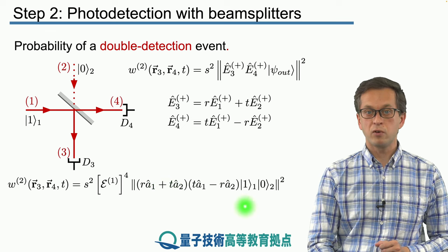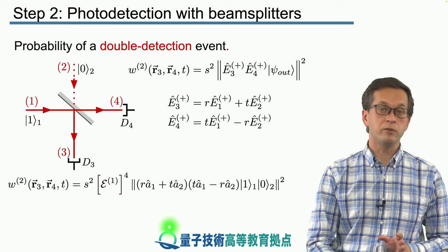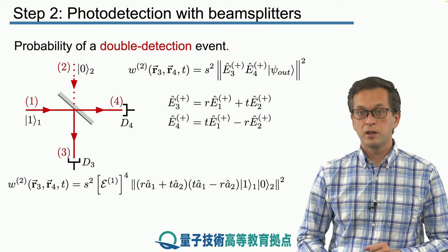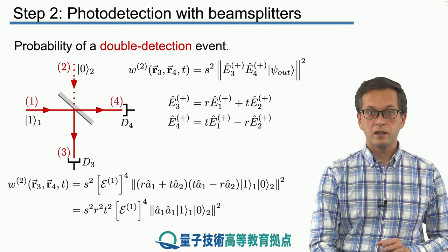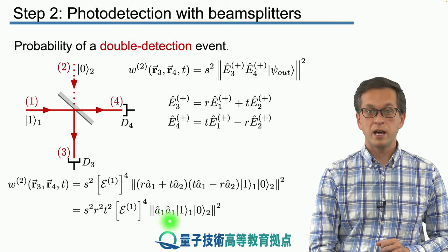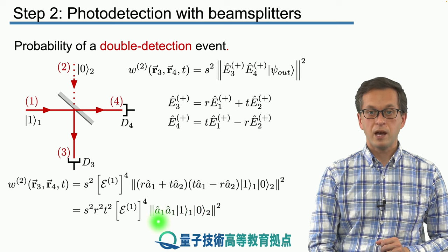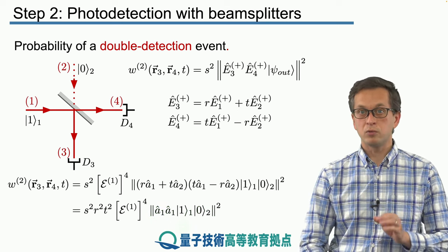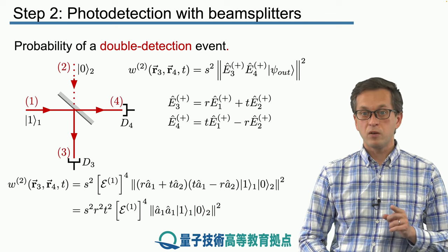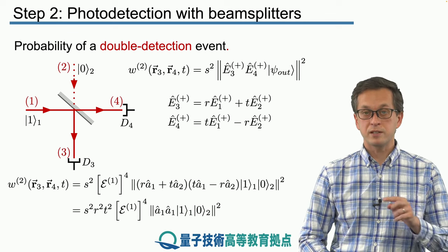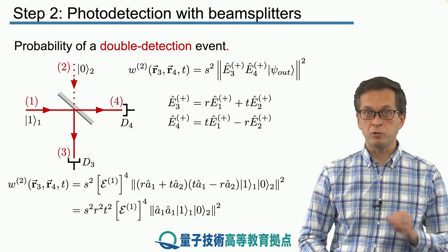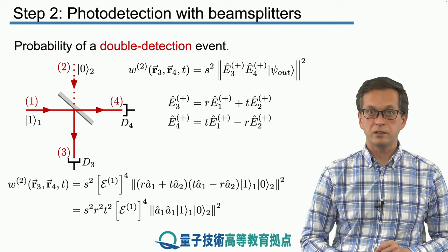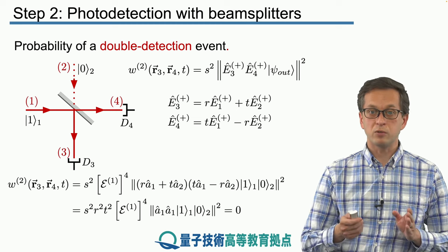So three of these four terms over here will not cancel, they'll vanish. They'll be equal to 0. So the only term that survives is the term A1 squared applied to our input state. And we know what happens when we apply A twice to a single photon state. The first A will bring it back to vacuum where the second application of A will destroy the vacuum. It will give us the number 0. So the photodetection signal W2 for a coincidence count is also equal to 0.